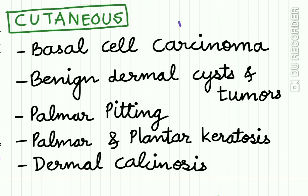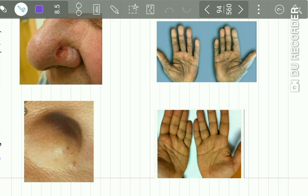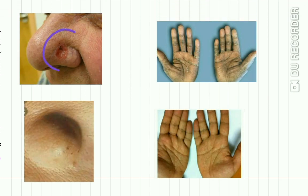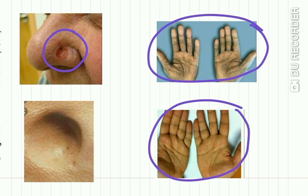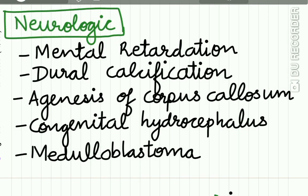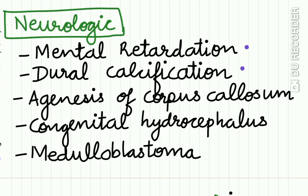Cutaneous anomalies include basal cell carcinoma, benign dermal cystic tumors, palmar pitting, palmar and plantar keratosis, and dermal calcinosis. Here you can see patients presenting with basal cell carcinoma, palmar keratosis, palmar pitting, and dermal cysts and tumors.